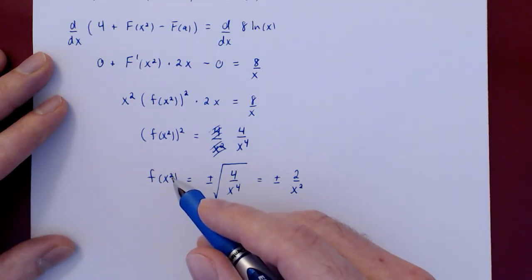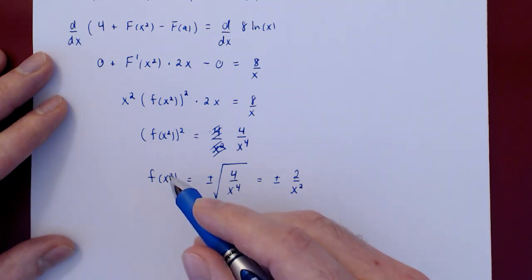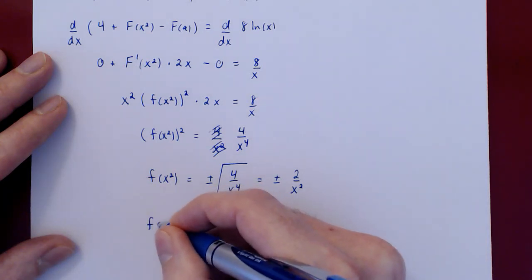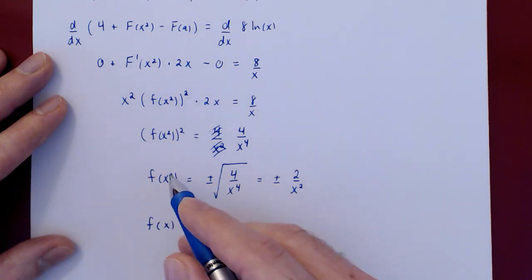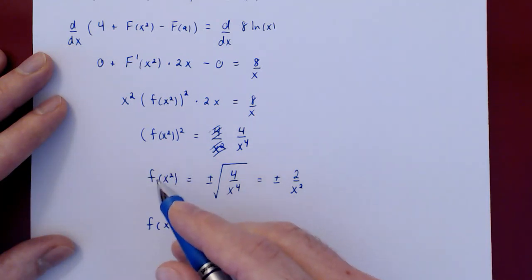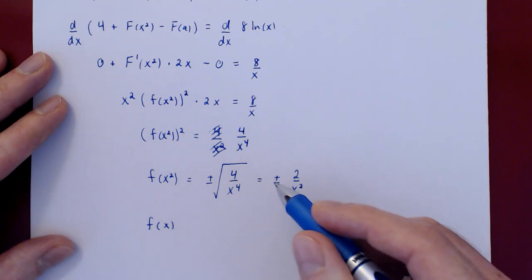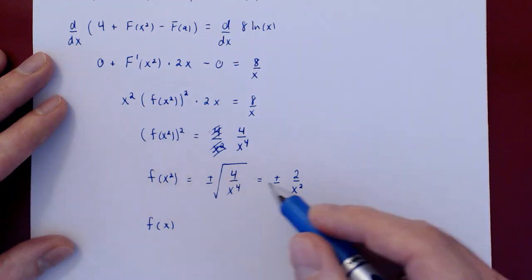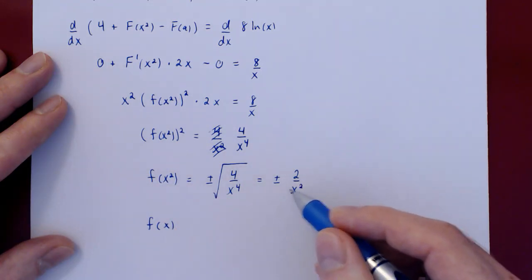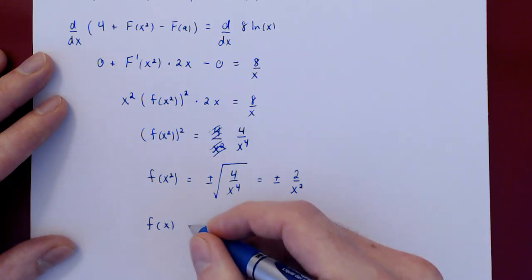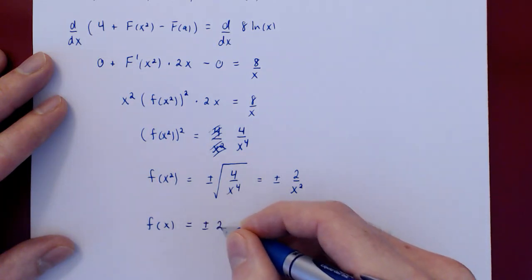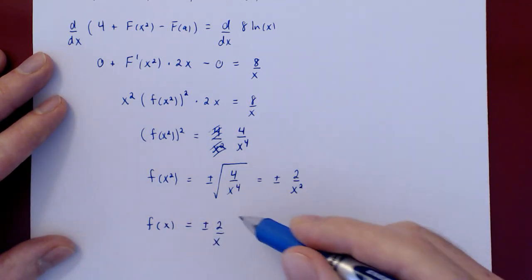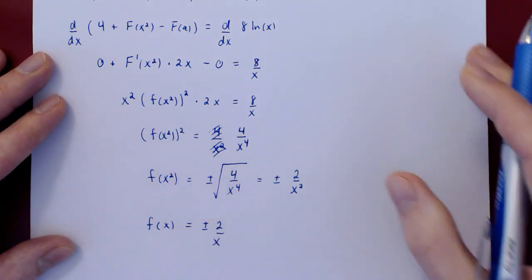We don't quite have f of x, but we have f of x squared. To go from f of x squared to f of x, we simply make the substitution of replacing x squared by x, since x squared is a variable. So if f of x squared is plus or minus 2 over x squared, then f of x will be plus or minus 2 over x. There are actually two possible answers for f: f could either be 2 over x or the negative of 2 over x.